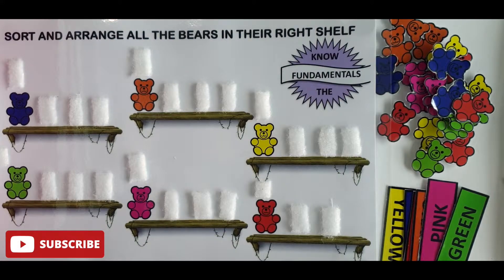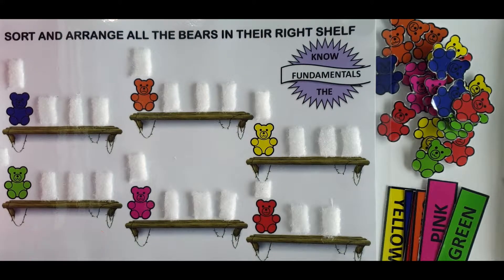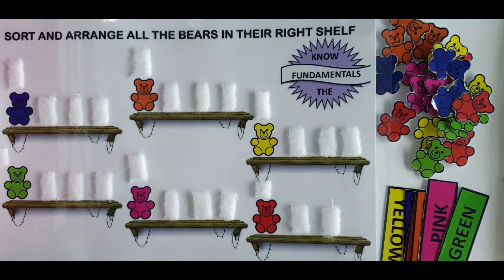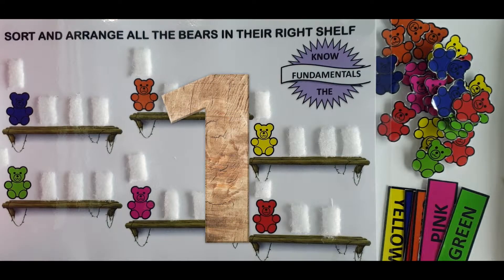Hello friends, welcome to my channel Know the Fundamentals. Today I'm going to share with you five color related activities that you could do with your kids from age three to five years. These activities are very good for building their logical thinking and concentrations. So let's start with activity number one.